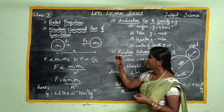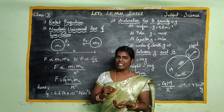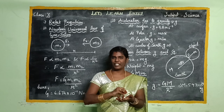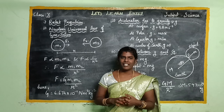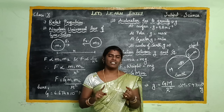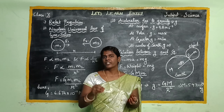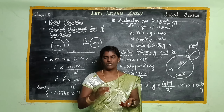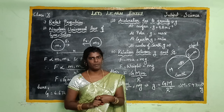What is rocket propulsion? A rocket is like a satellite launch vehicle. Rocket propulsion is based on two principles: Newton's third law and conservation of linear momentum. Newton's third law states that for every action there is an equal and opposite reaction.